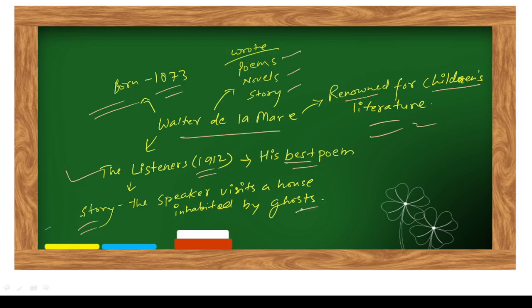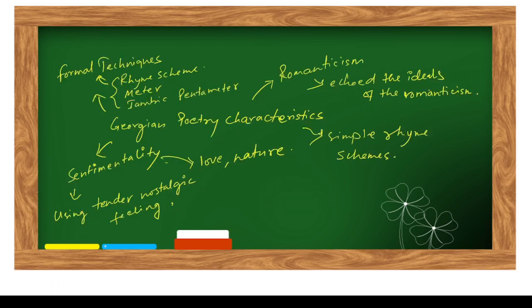If we talk about Georgian poetry characteristics, first of all they used formal techniques of writing poetry - first is rhyme scheme, they used meter, they used iambic pentameter. As I told you earlier, they were romantics of their time. They echoed the ideas of romanticism. That's why they are called romantics of that particular time.